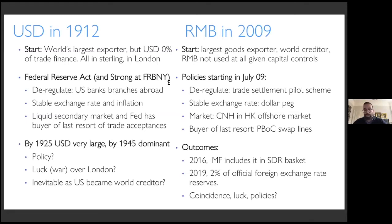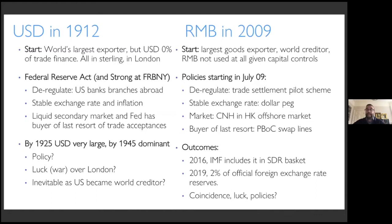The outcomes: by 2016 the IMF included the RMB in its basket. By 2019, the RMB is roughly 2% of foreign exchange reserves. These policies were successful insofar as the RMB went from zero to being arguably an international currency. Was it a coincidence that the same policies led again to a country jump-starting? Was it just luck again? Were these policies active in producing that result? That's basically what this paper is about.